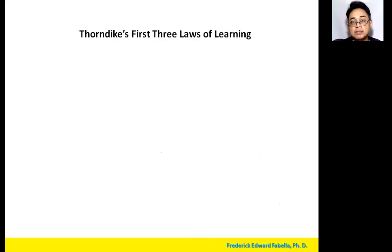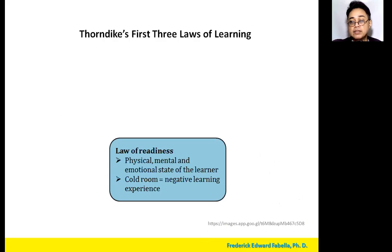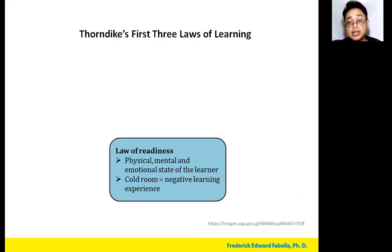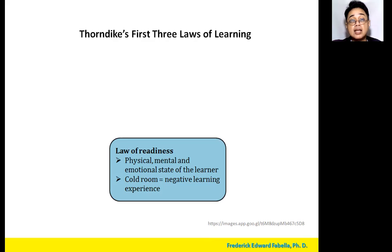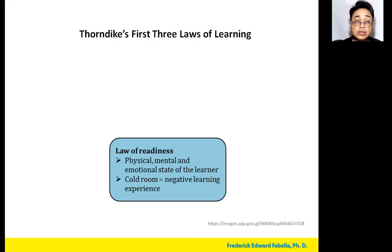Thorndike came up with three main laws of learning. The first is the law of readiness: for someone to be able to learn something, that person must be ready to learn. Their physical, mental, and emotional state has to be ready for whatever is to be learned. At the same time, the situation or environment has to be conducive to learning.